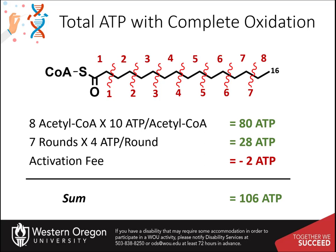Subtracting off the 2 ATP equivalents required for the formation of the fatty acyl-CoA at the beginning brings the total ATP potential to 106 ATP — quite a bit more than a single molecule of glucose, rated at about 32 ATP.